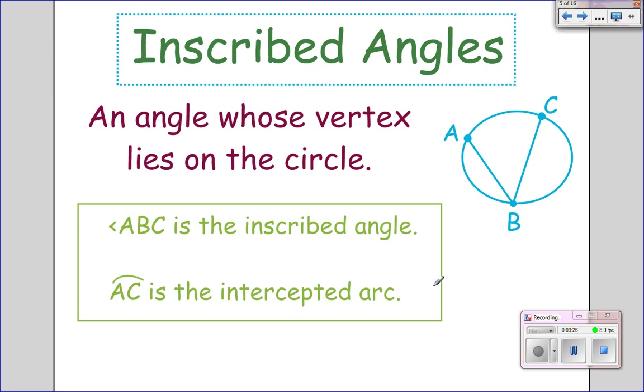An inscribed angle is an angle whose vertex lies on the circle. So a central angle is right in the center. An inscribed angle is right on the edge of the circle. So angle ABC is the inscribed angle. And then AC is the intercepted arc. Because it's the arc that the angle is crossing.